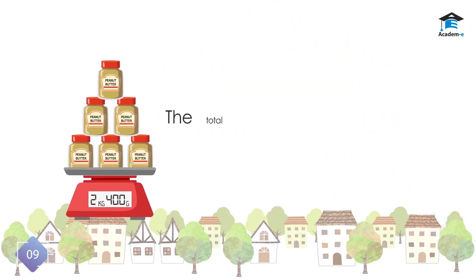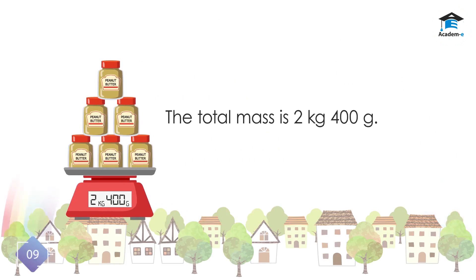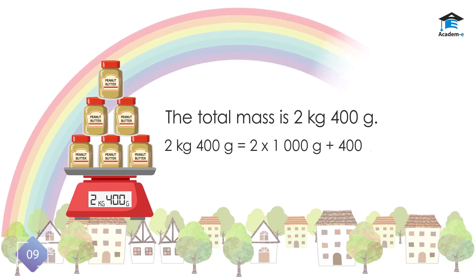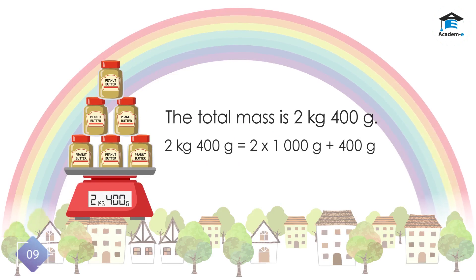The total mass is 2 kilograms 400 grams. 2 kilograms 400 grams is equal to 2 times 1,000 grams plus 400 grams. Therefore, the answer is 2,400 grams.